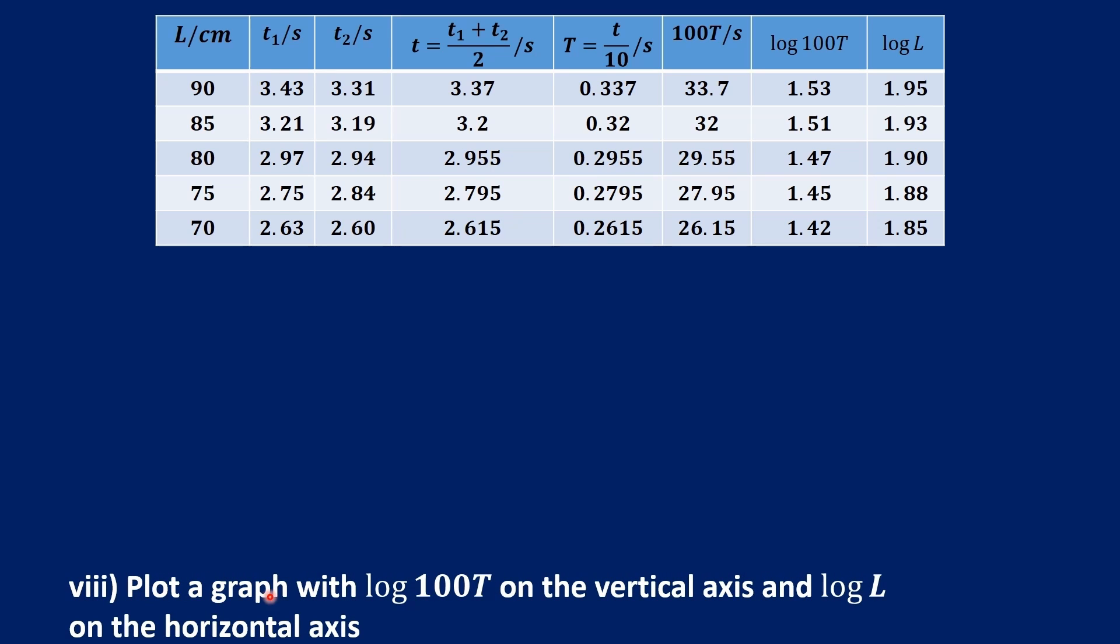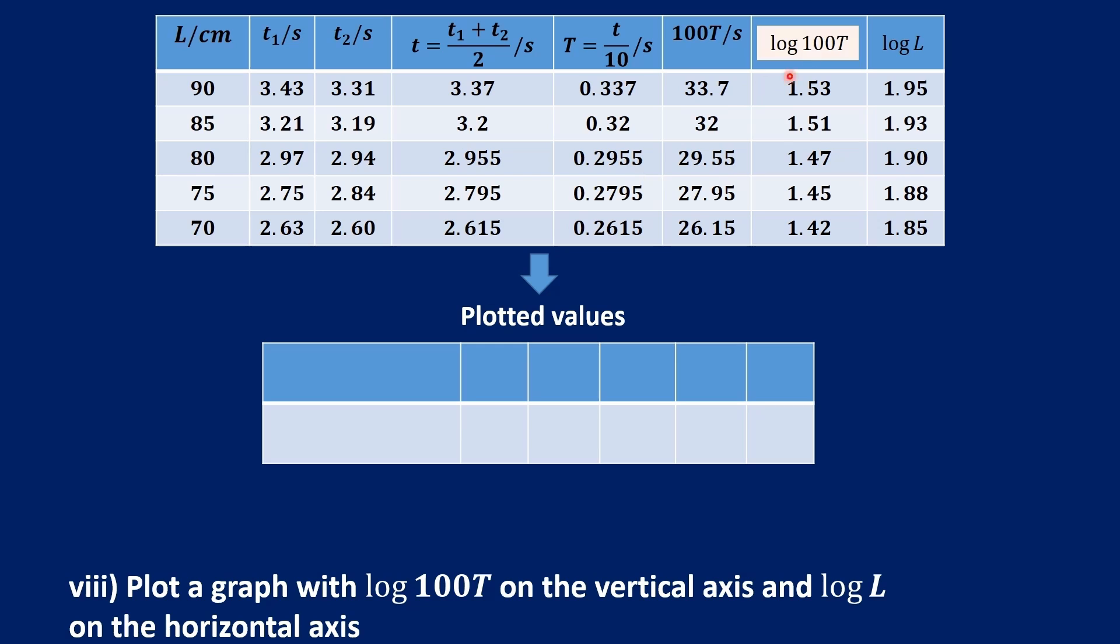Plot a graph with log 100T on the vertical axis and log L on the horizontal axis. We need the values of log 100T, and they are all decimals. And it's difficult to plot decimals on the graph.